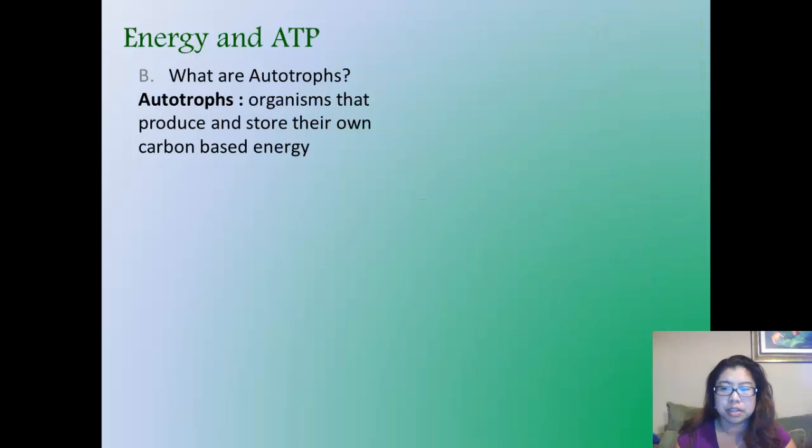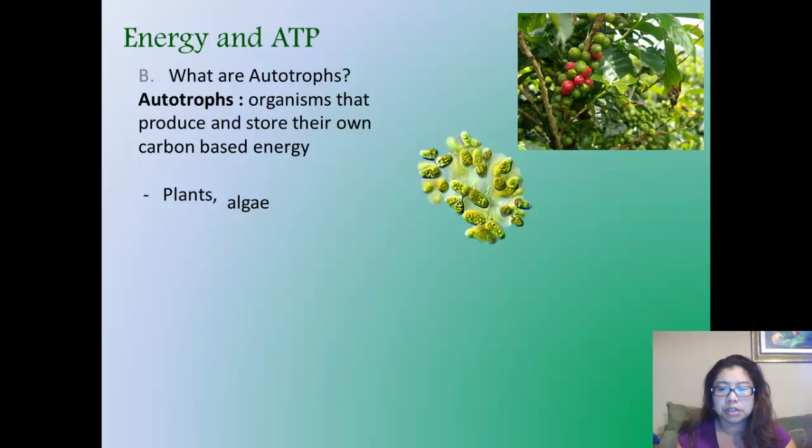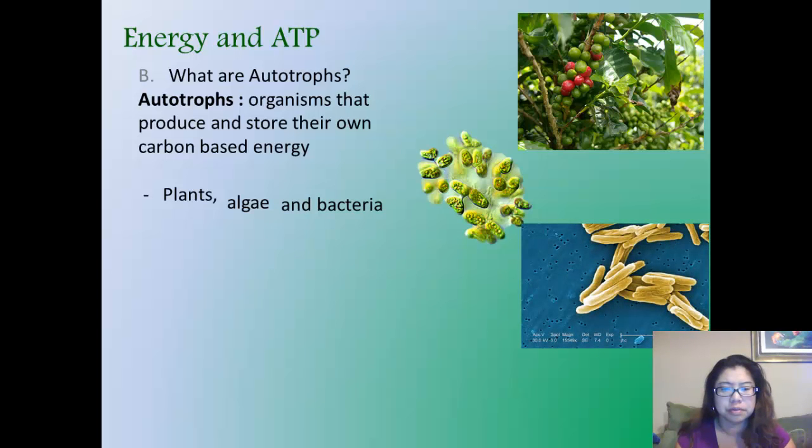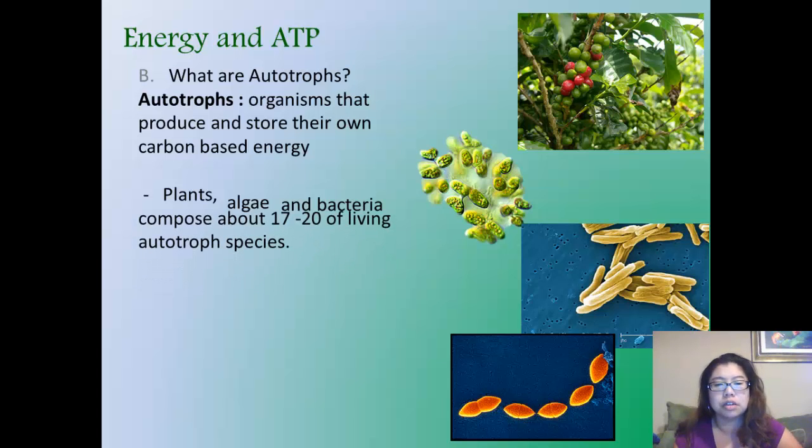For instance, plants that you've seen before, this coffee bean plant. We have algae, and this is a microscopic picture of an algae. And bacteria, and there's a picture of, I believe, Salmonella bacteria. And I believe that's E. coli. All three of them together compose about 17 to 20% of the living autotrophic species.